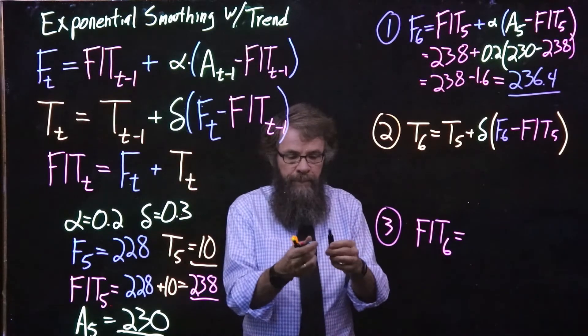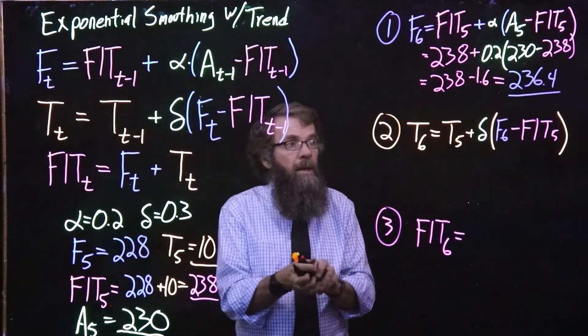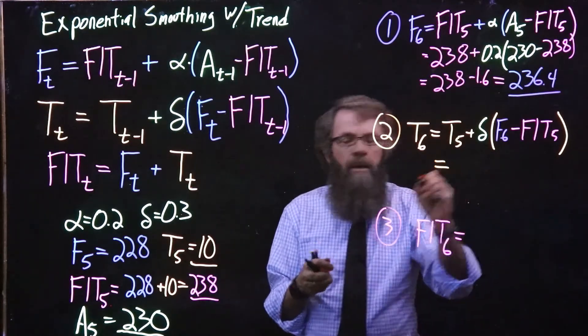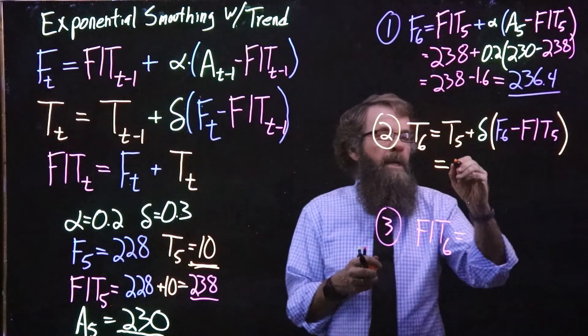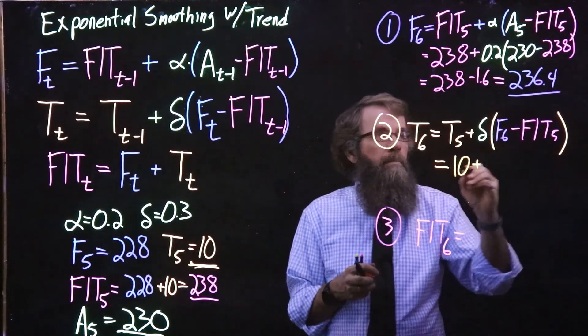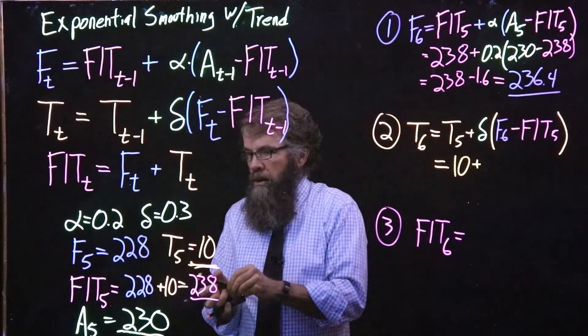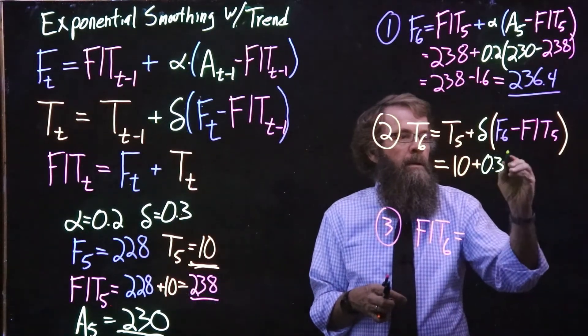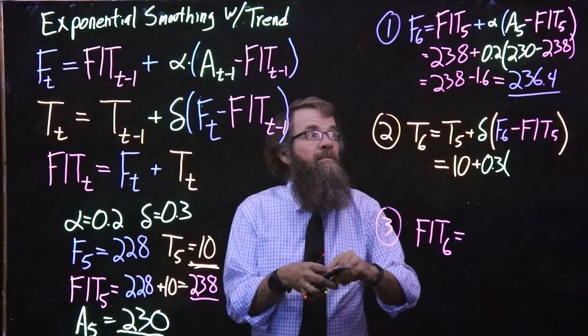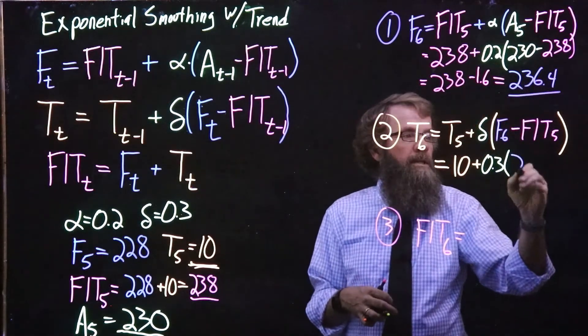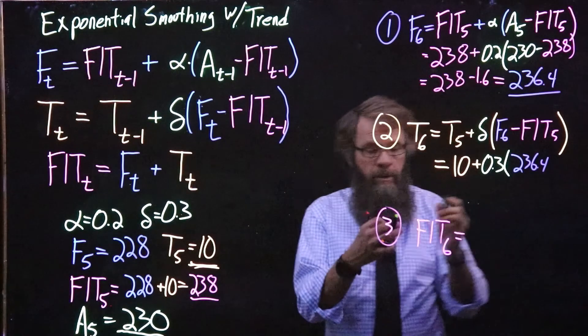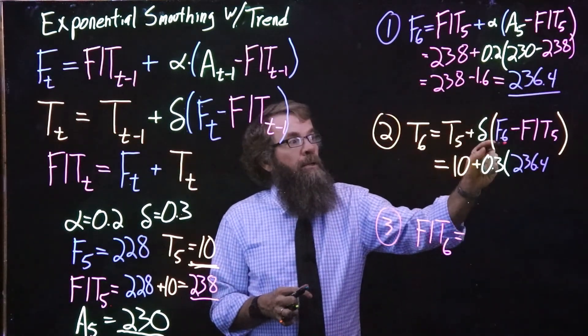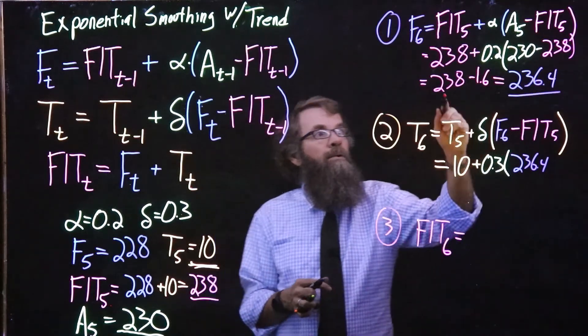Alright, so now on to the trend. To get the new trend, we take the old trend. The old trend was 10, so we have 10 plus, then our delta value is 0.3, so we have 0.3 times the F value that we just calculated, 236.4, and then we'll subtract off from that the forecast including the trend from period 5, which was 238.